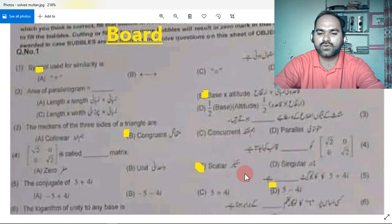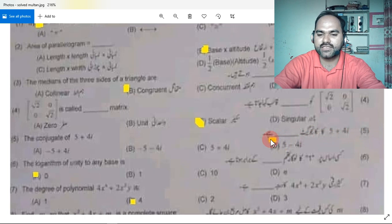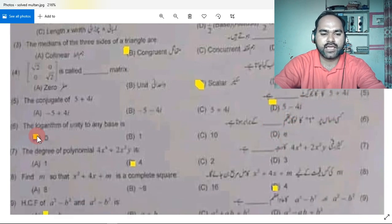Dot ko kalab kya jata hai? Toh kaun sa kalab kya jata hai? Scalar kalab, thik hai. Next hai scalar, ya scalar you can say anything. 5th conjugate, conjugate D is correct.